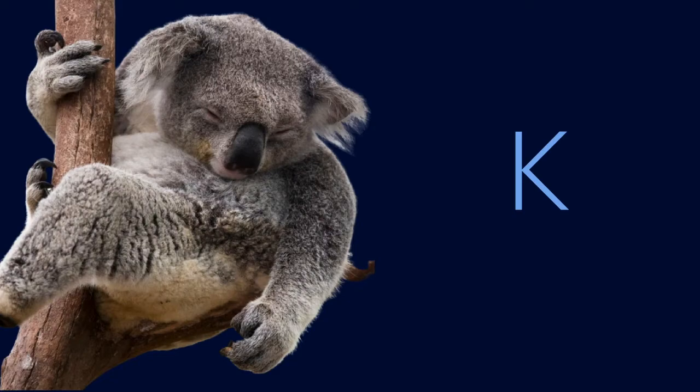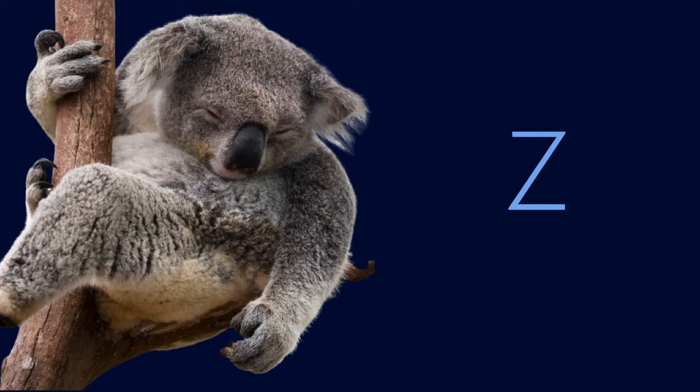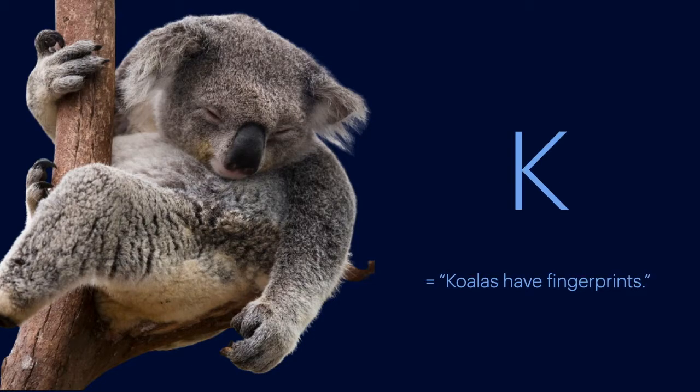We use a single capital letter to stand for a sentence of English. So the English sentence, koalas have fingerprints, becomes K in our formal language. You get to decide what constant stands for what sentence, so you don't have to use the letter K. You could use F instead, or even Z. But the point is that in our formal language, the English sentence, koalas have fingerprints, is replaced by a constant, a capital letter.